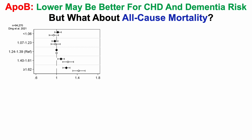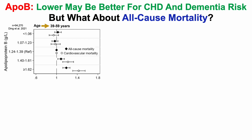That's what we'll see here in this study of about 94,000 people. We've got APO-B on the y-axis, and then two outcomes: cardiovascular mortality risk in the open circles, and all-cause mortality risk in the black diamonds. These data are first shown for 39 to 59-year-olds. Relatively higher levels, higher than 1.4 grams per liter, were associated with an increased cardiovascular and increased all-cause mortality risk.